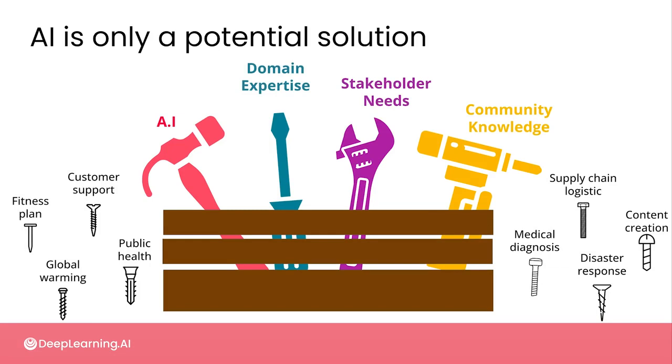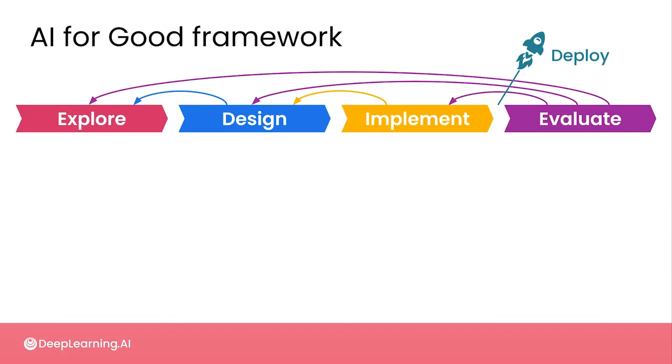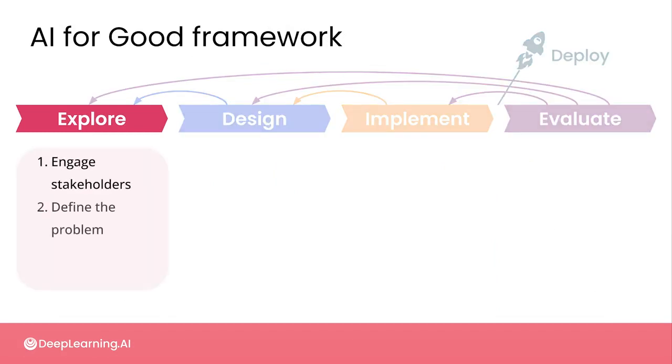In the lessons that follow in this course, we'll be walking through a framework for approaching any problem you might want to work on that could involve AI. Literally one of the first steps is to determine whether AI could actually add any value as part of the solution. For many real world problems, AI simply doesn't add value, and it's important to recognize that as early as possible, so you don't waste your time and resources trying to implement an overly complicated AI solution where it's simply not needed.